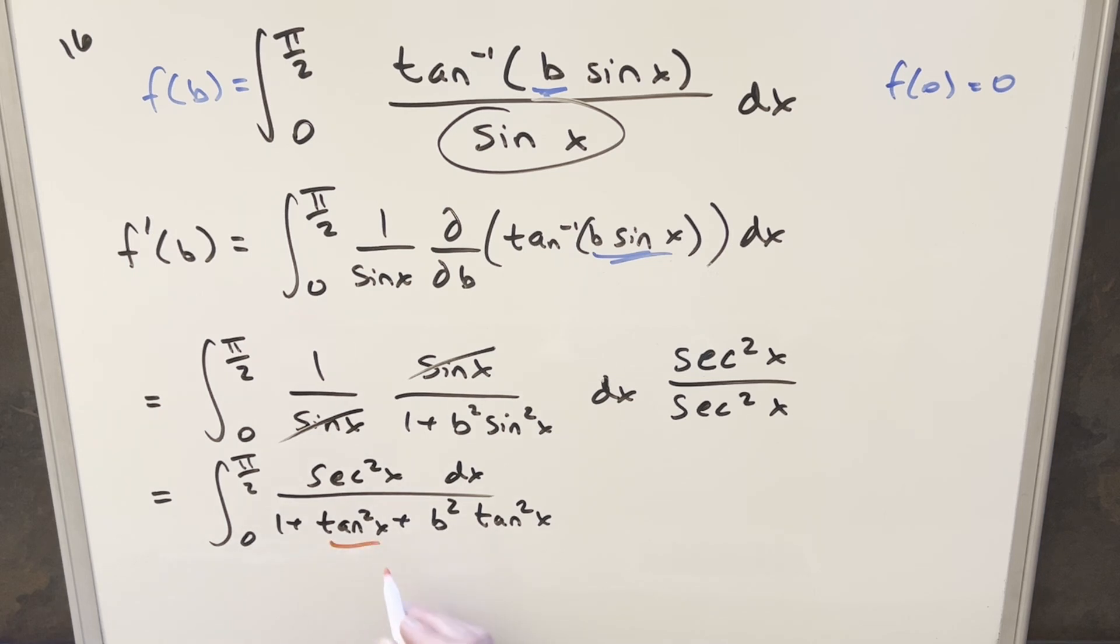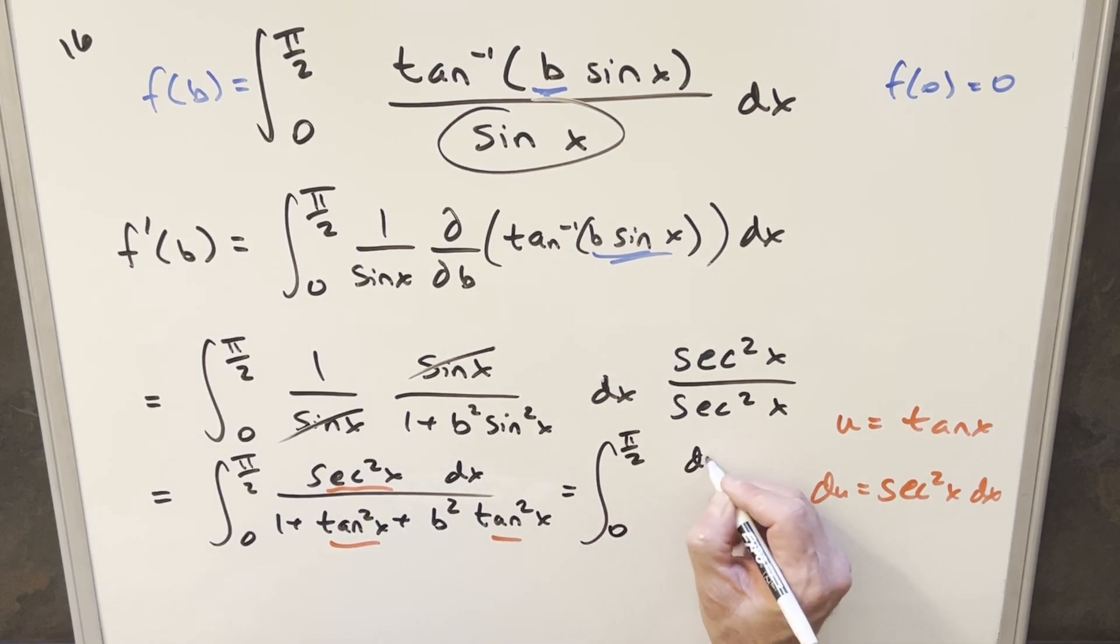But now that we have everything in terms of just tangent and secant squared, we can do a u substitution on this. So what I'm going to do is I'm just going to set my u equal to tan of x, and then for du, that's going to be secant squared x dx, which is our whole numerator here. So let me see if I can squeeze it in right here. So for our substitution, we end up with du. I can put these two together.